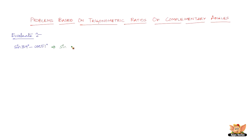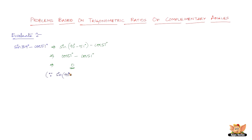Sine 39 degrees can be written as sine of 90 degrees minus 51 degrees, because 90 minus 51 degrees is nothing but 39. So cos 51 degrees remains as is. Now, sine of 90 minus 51 degrees equals cos 51 degrees, so cos 51 degrees minus cos 51 degrees equals 0. The reason: sine of 90 degrees minus theta equals cos theta. This is the relationship used to convert sine(90 - 51) into cos 51 degrees.